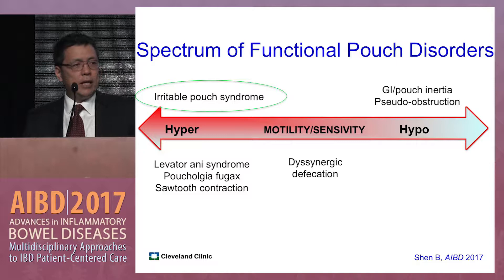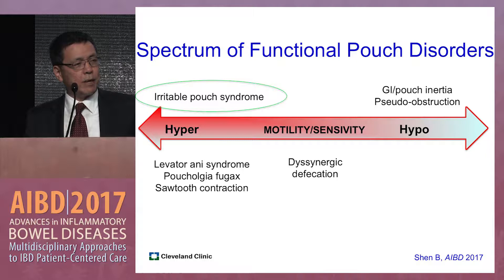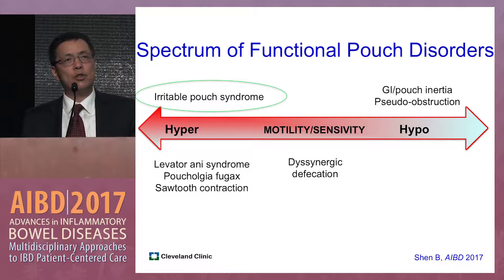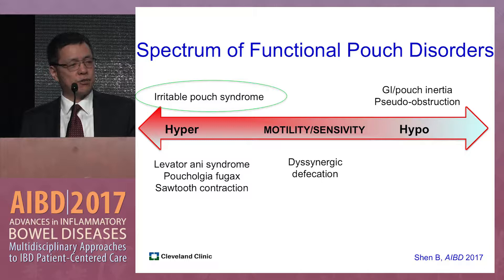Irritable pouch syndrome is a disease spectrum involving hyper or hypomotility and sensitivity. On the hyper side, you have irritable pouch syndrome, followed by levator ani syndrome, pouchalgia fugax, and sore tooth contractions. On the hypo side, you have a flaccid pouch or pouch inertia and obstruction. In the middle is anismus.